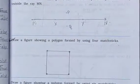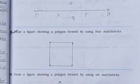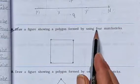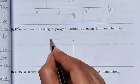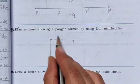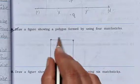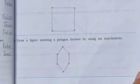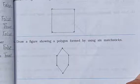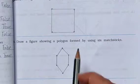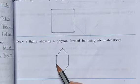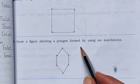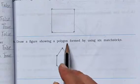Question number 8: Draw a figure showing a polygon formed by using four matchsticks — that makes a four-sided polygon using one stick per side. Question number 9: Draw a polygon formed by using six matchsticks — that gives a hexagon using six sticks, one for each side.